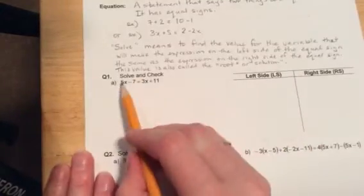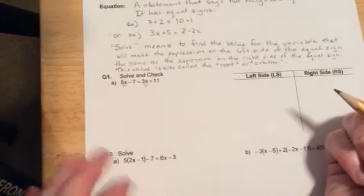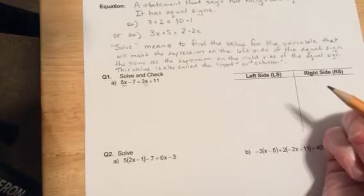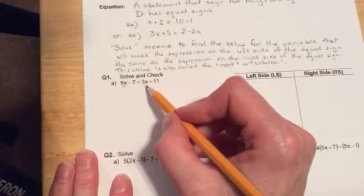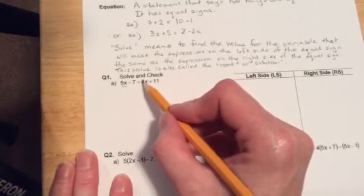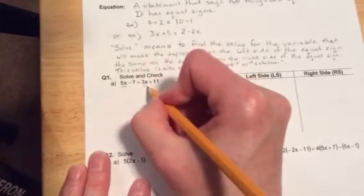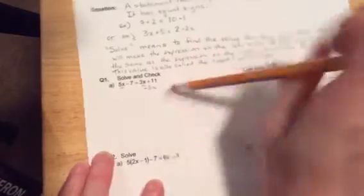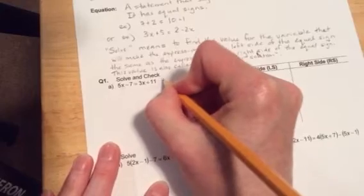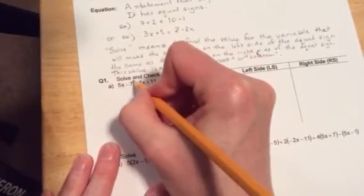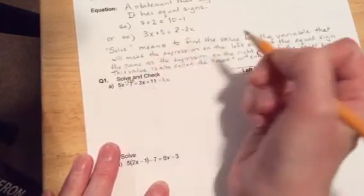Now we're going to solve and check. With this equation we have x's on both sides of the equal sign. Our goal is to get the x's together on the same side. To keep our equation balanced, we have to do the same thing to both sides. Here we have a positive 3x. We're going to undo that by taking 3x away, so I'm going to put minus 3x on this side. We also have to do it to the other side to keep it equal.